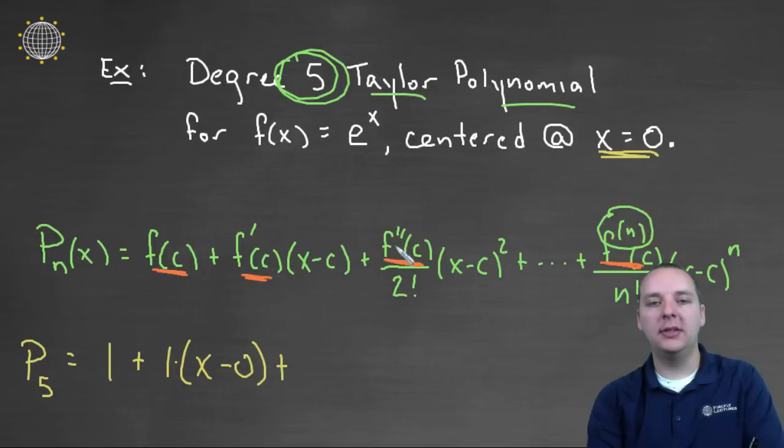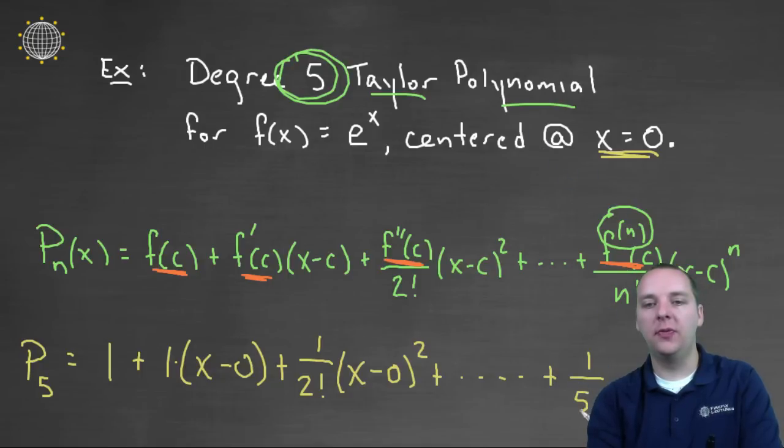Alright plus f double prime at zero over two factorial times x minus zero squared plus, and we're going to continue this pattern on until we get to our very last term, the fifth derivative of e to the x evaluated at zero which is one, over five factorial times x minus zero to the fifth power. So this is the polynomial of degree five that will approximate e to the x.